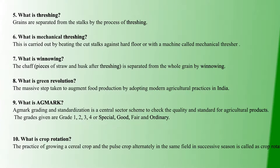Next question: what is threshing? Threshing is the process of separating grains from the stalks — stocks and grains are separated. Grains are the edible food. What is mechanical threshing? Mechanical threshing is done by beating on a hard floor — this is done by means of man, not by machine — to remove the grains.